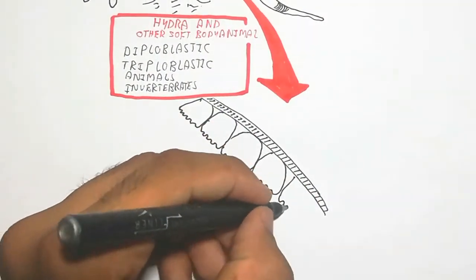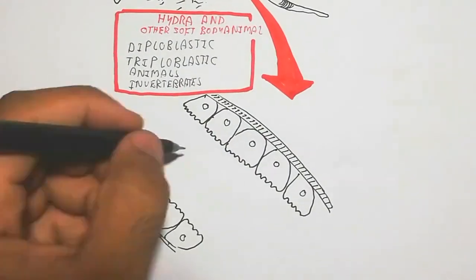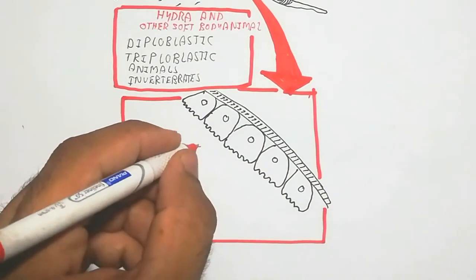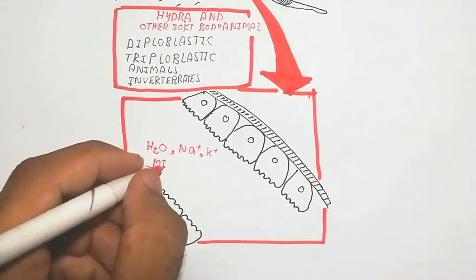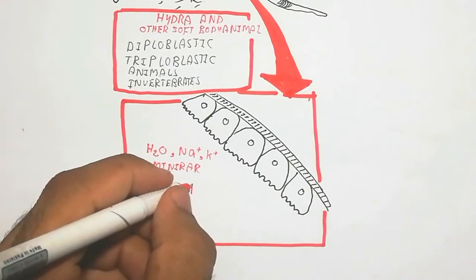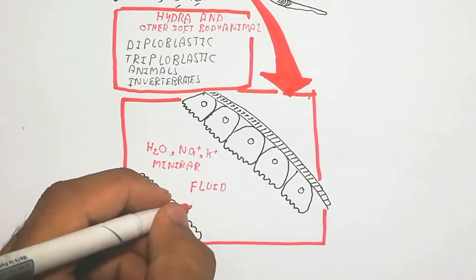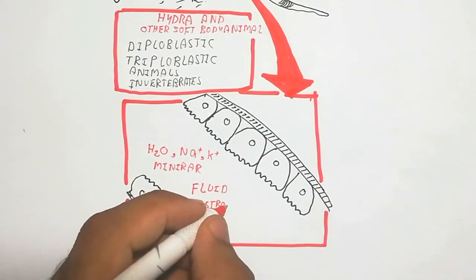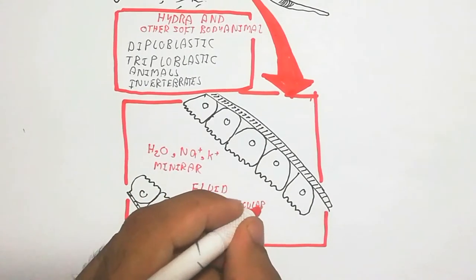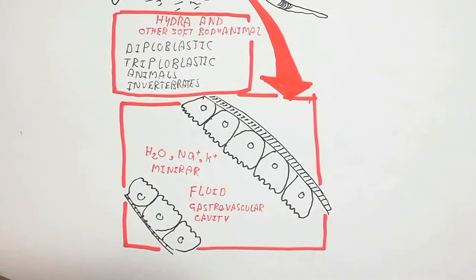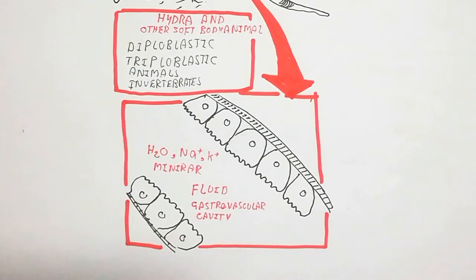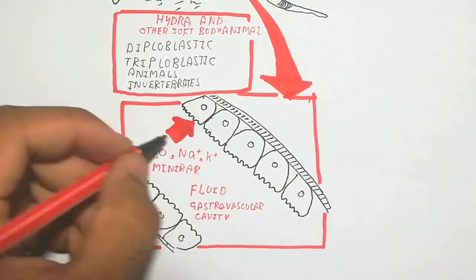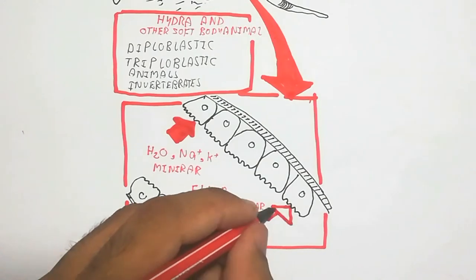The gastrovascular cavity contains sodium, potassium, nitrogen, and minerals — composed with fluid. Epithelial cells are present inside for the absorption of food. When food enters the gastrovascular cavity, it mixes with the water and enzymes secreted by the epithelial cells, which absorb the food.